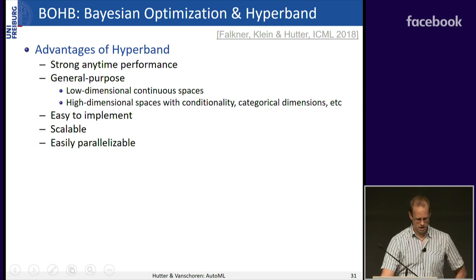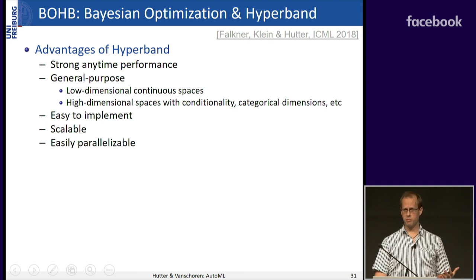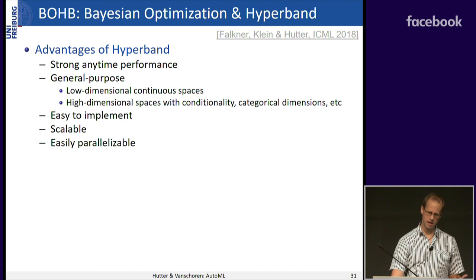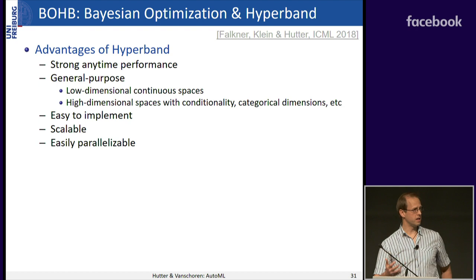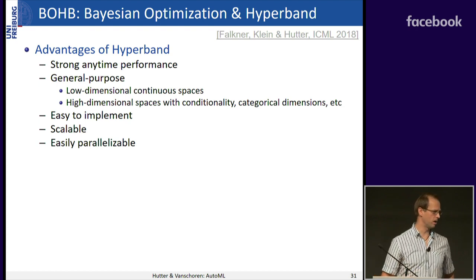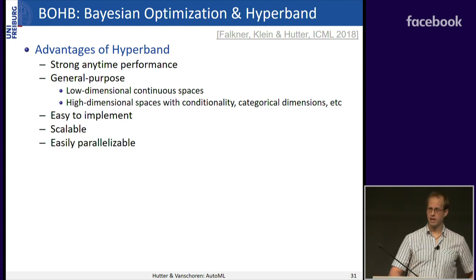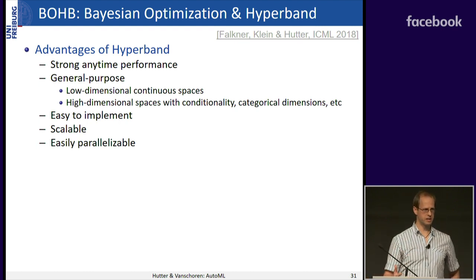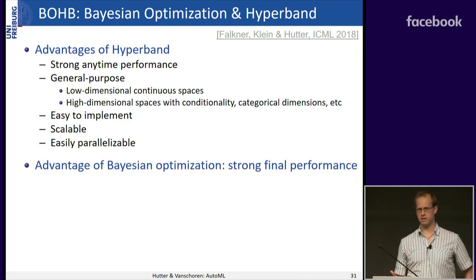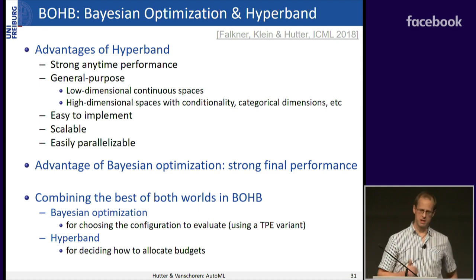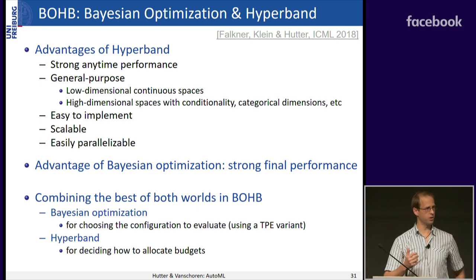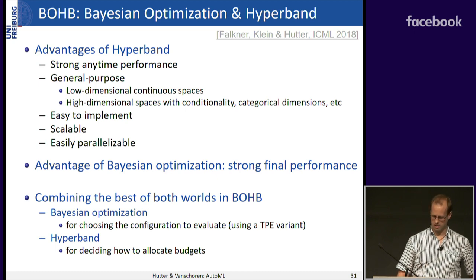Hyperband has many advantages: strong anytime performance due to multi-fidelities, general-purpose applicability to low- and high-dimensional spaces and conditionalities, easy to implement, scalable, and easily parallelizable. However, it is based on random search and doesn't exploit knowledge about which hyperparameter settings work well. Bayesian optimization is strong there, so we combined them — using Bayesian optimization to pick configurations and hyperband to allocate budgets — to get the best of both worlds. This combined method is called BOHB.